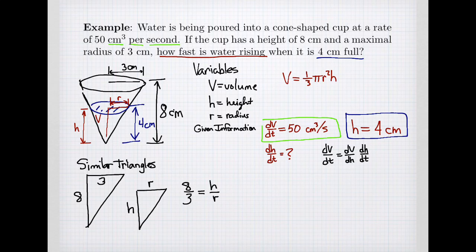And so if I cross multiply, I get 8 radius equals 3 times the height. And I want to find a way of getting my volume in terms of just the height. So I'm going to solve for r. My radius is 3 eighths of my height.